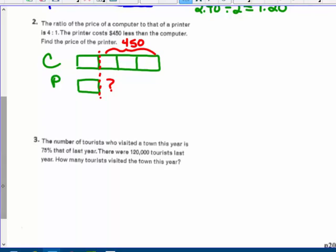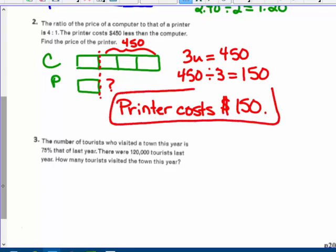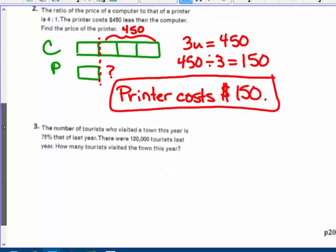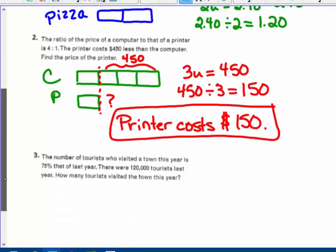Find the price of the printer. Well, three units represent $450. So one of them would be $450 divided by three, which equals $150. And that happens to be the printer. The printer costs $150. I didn't label the first one. I just didn't have room. I did read the, I did say the sentence, though, that the price of a drink is $1.20. Here's the answer.